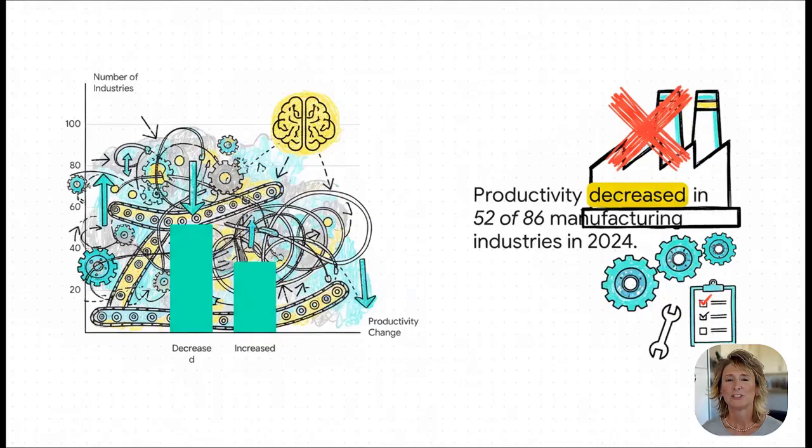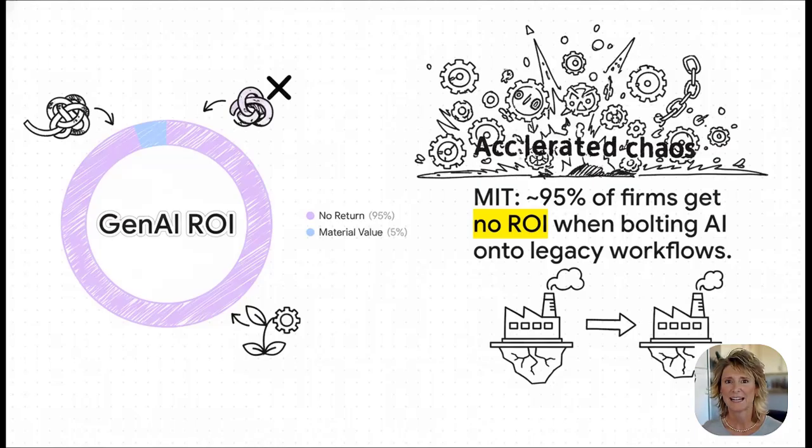This is from the Bureau of Labor Statistics. Just last year, manufacturing labor productivity actually went down in 52 industries. 52. Think about all the billions and billions of dollars spent on software that promised more efficiency. And in most cases, we are literally going backwards. And when you look specifically at AI, the numbers get even crazier.